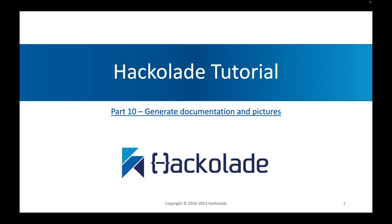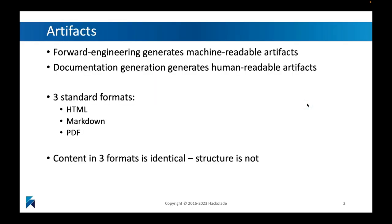Hello everyone, and welcome to part 10 of our Hackolade tutorial. In this part, we're going to be talking about how you can use Hackolade to generate documentation and pictures straight from your data models. This is important because some of our artifacts are machine-readable, as demonstrated in the previous section through forward engineering. With our documentation generation capabilities, we are going to be generating human-readable artifacts — things that humans can understand and work with.